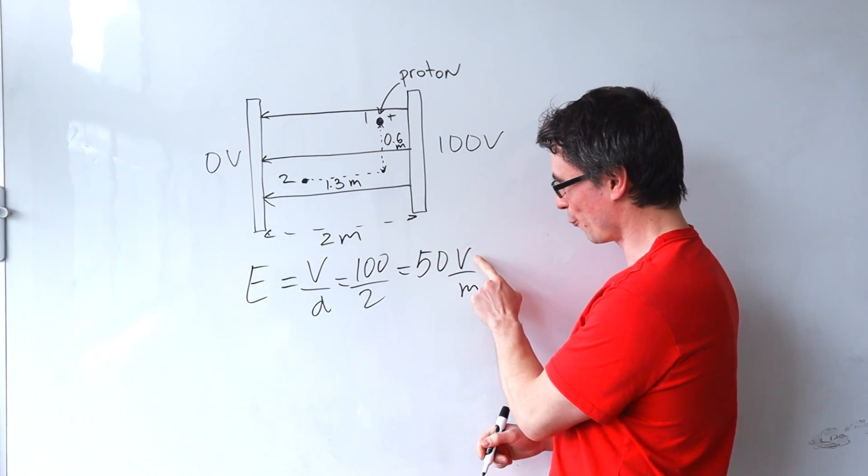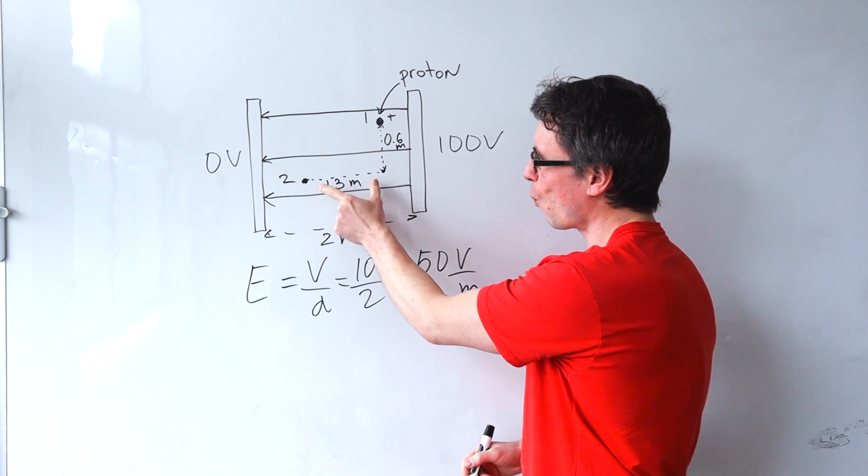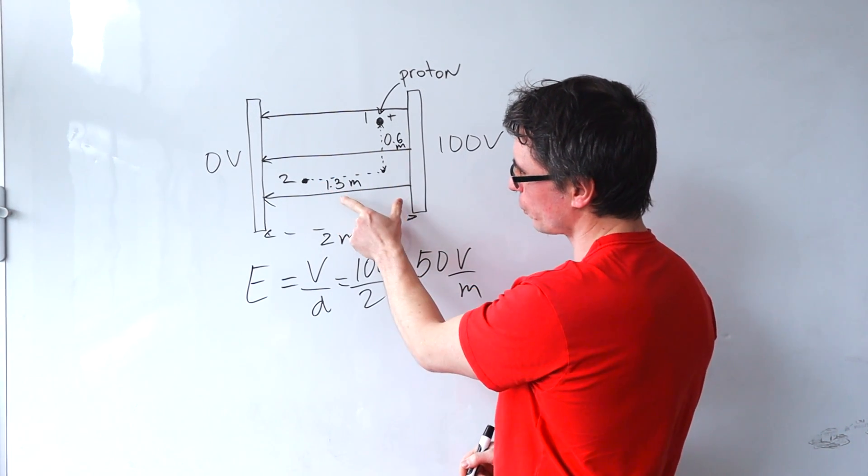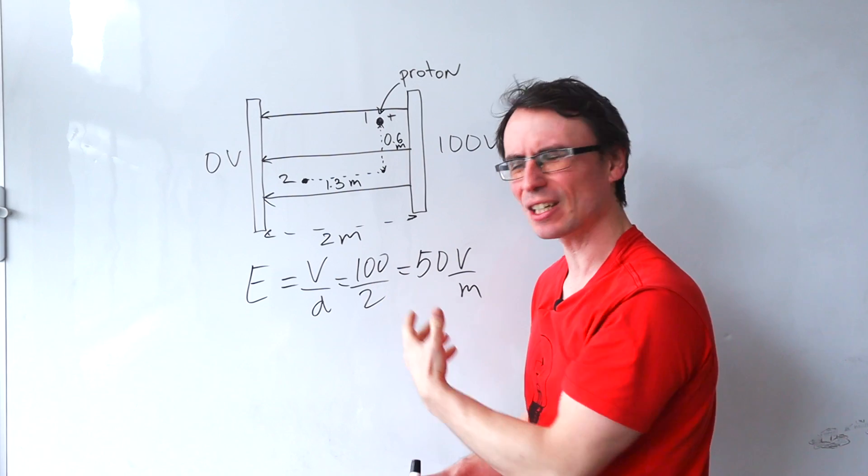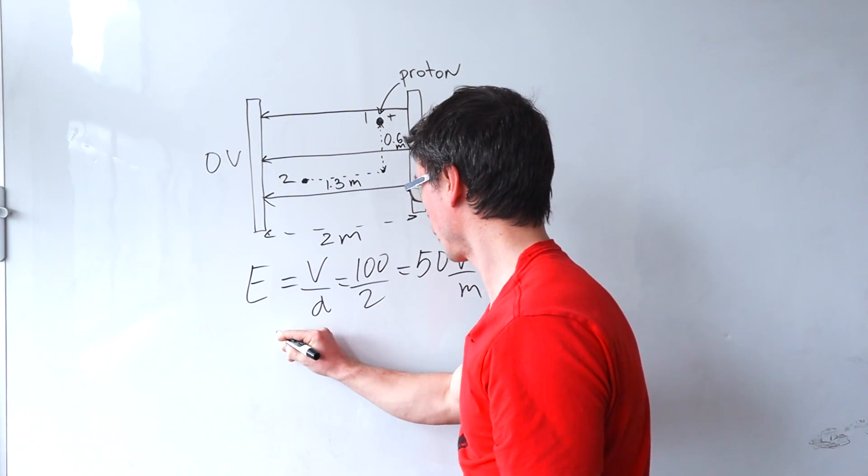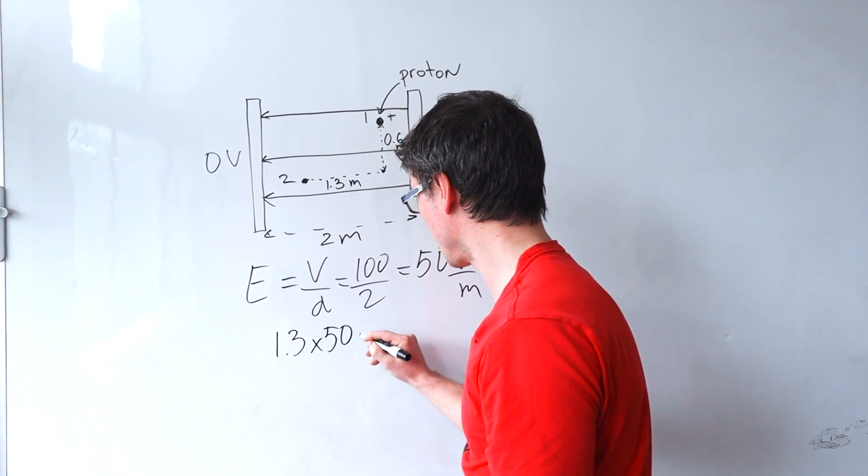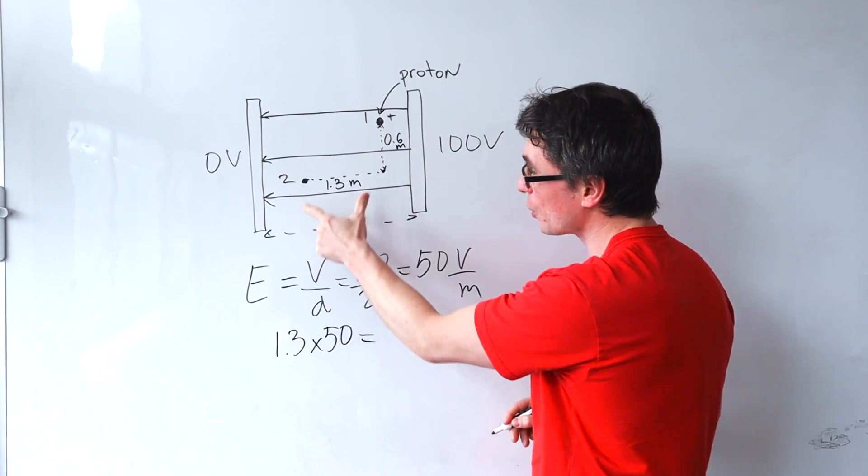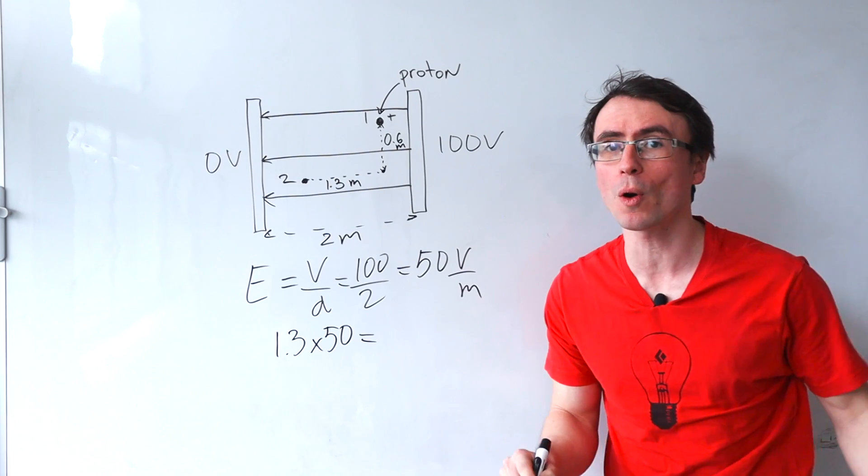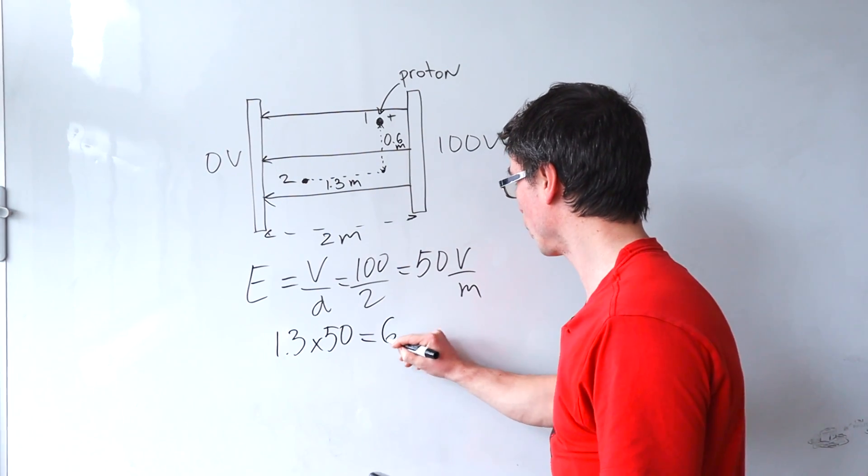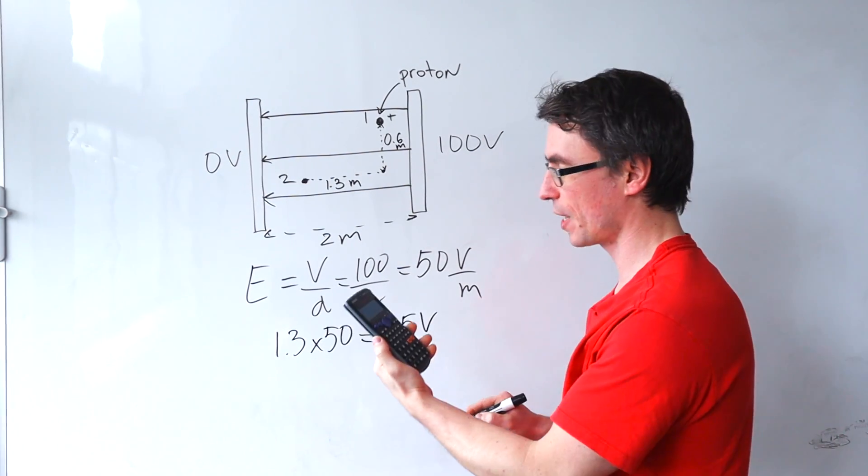The units here are really important. Volts per meter. Well one meter will be 50 volts so 1.3 will be just a little bit over that. So 1.3 multiplied by 50 will give me a change of potential between those two points which is just equal to 65 volts.